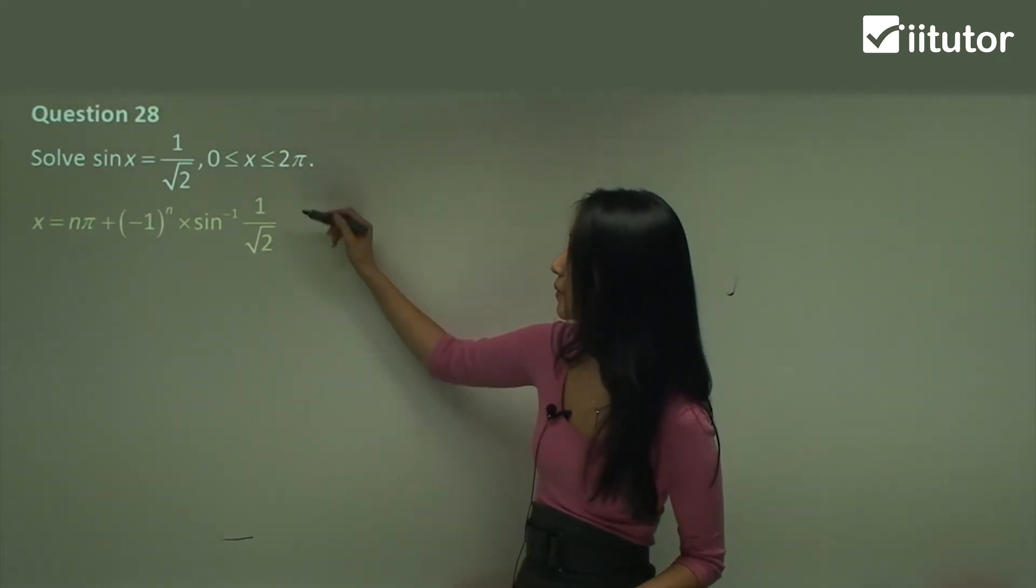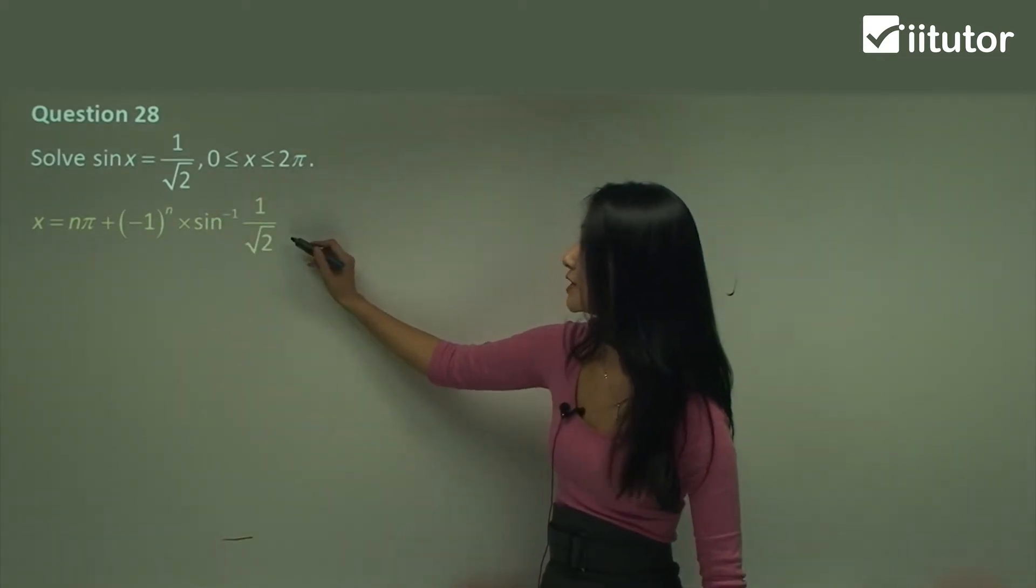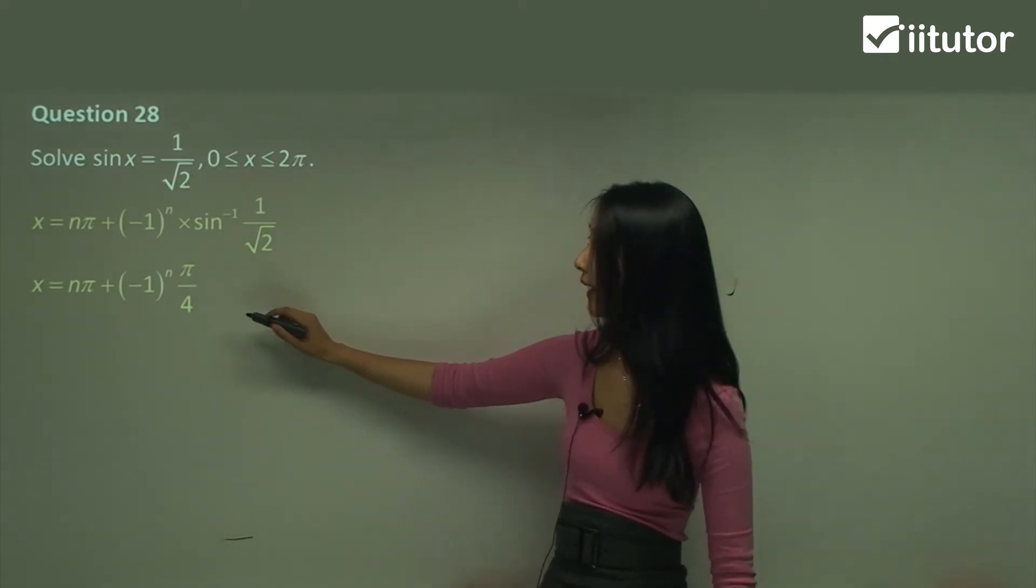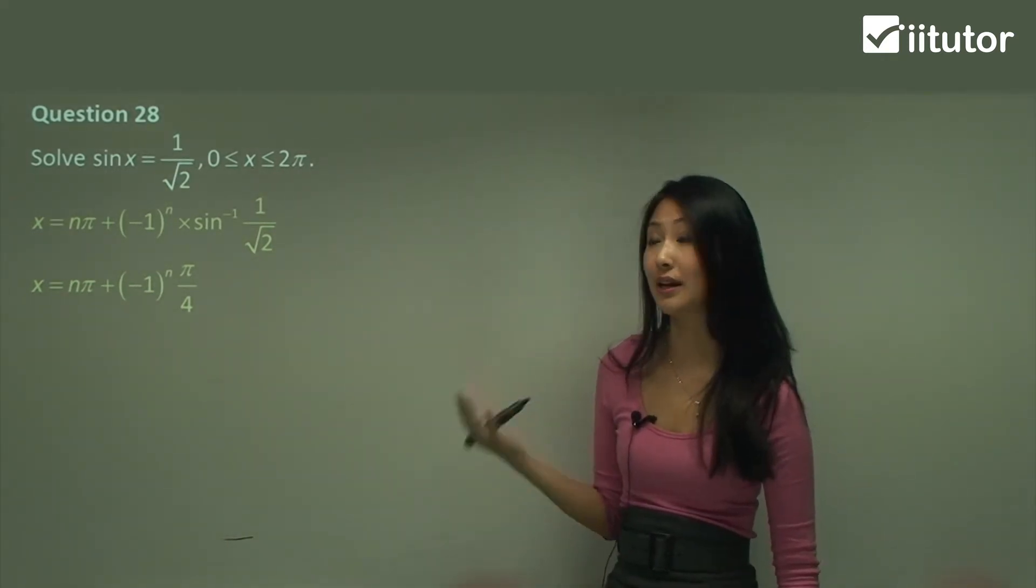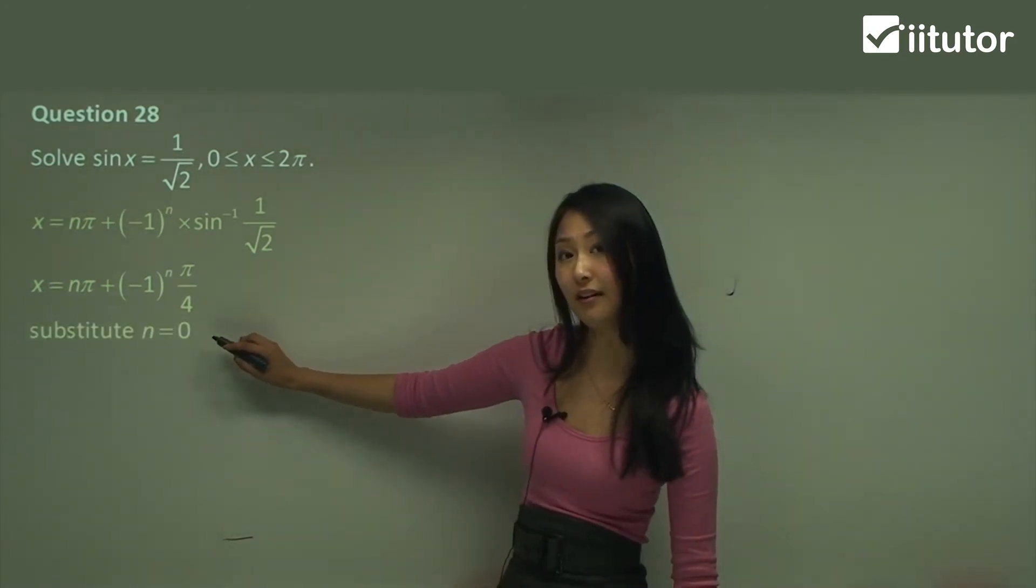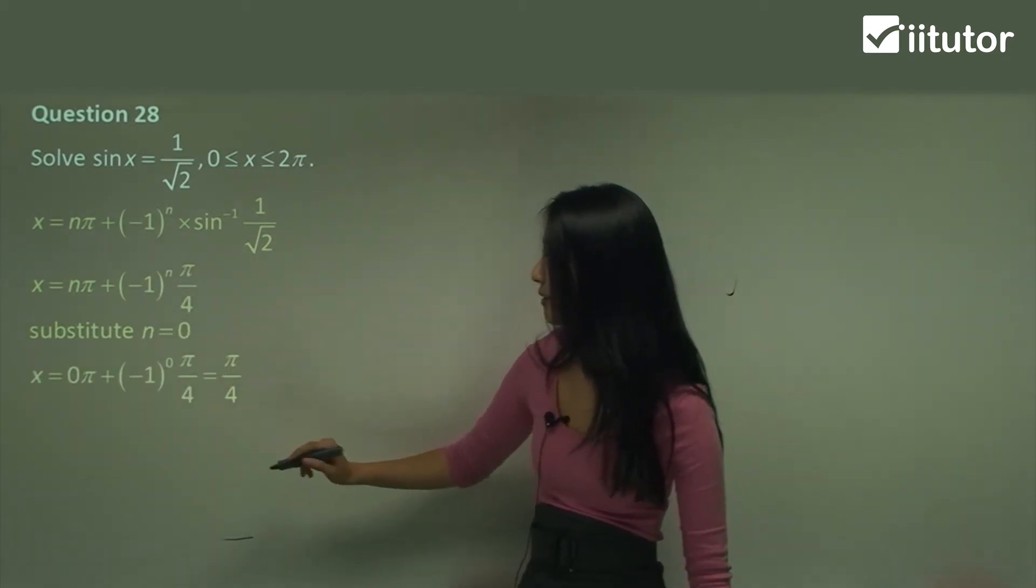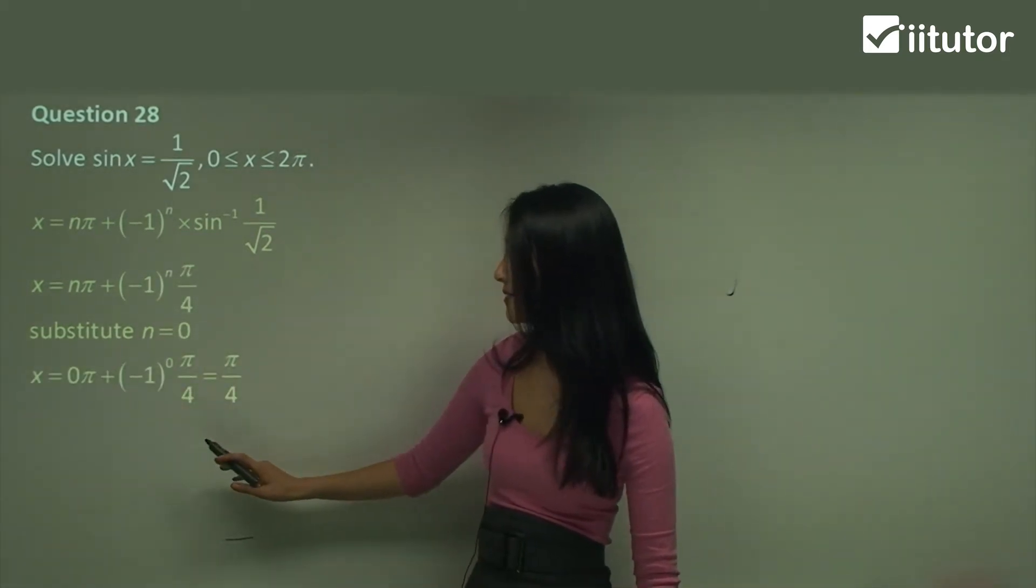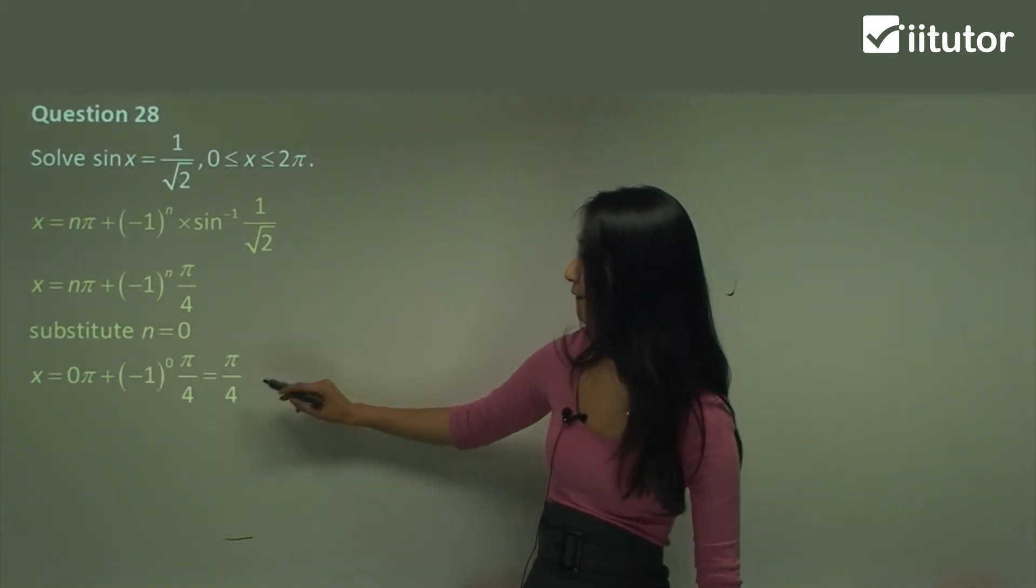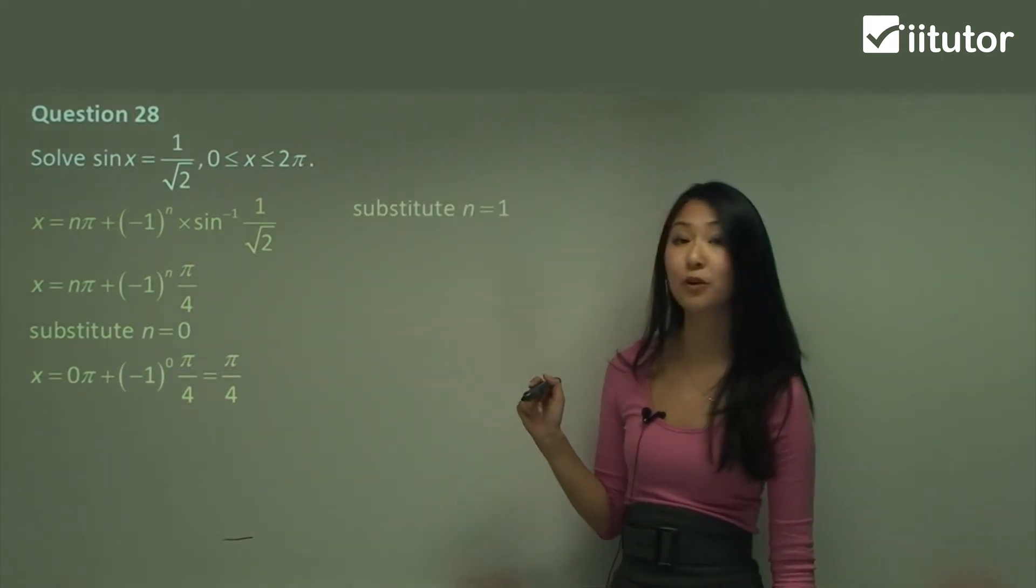So we've just substituted 1 on square root 2 into the general formula there. What is sine of what equals to 1 on square root 2? It's pi on 4. Okay and now we just substitute in numbers and see if it falls between that. So I always start off with n equals to 0. So substituting in 0 and 0 you're going to have 0 times pi is just 0. This just becomes 1 essentially. Pi on 4 so your answer is just pi on 4. Let's check that. Yes it does fall in there.